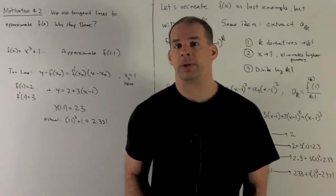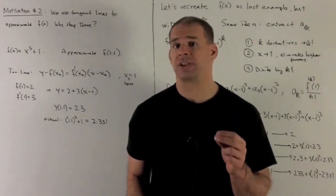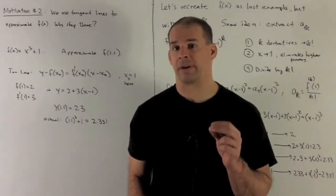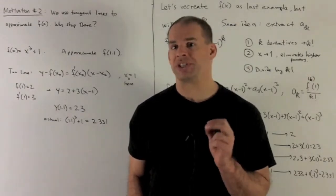For our second motivation of Taylor polynomials, we use tangent lines to approximate functions when they have derivatives at a point. So the question is, why would you stop there?